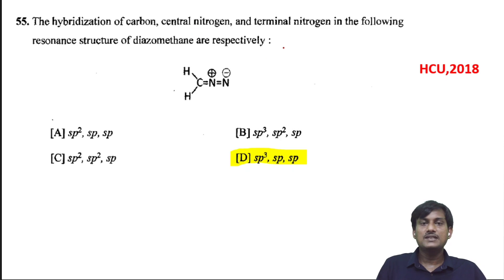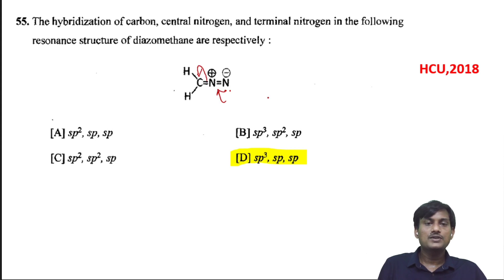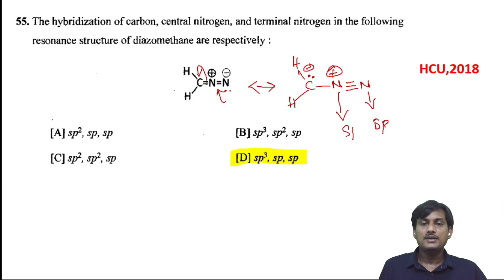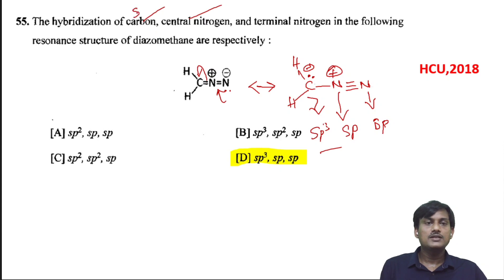The hybridization of carbon, central nitrogen, and terminal nitrogen in the resonance structure of diazomethane: taking the resonance structure, this compound has a lone pair of electrons that can move towards carbon. In another resonance structure, there is a negative charge; since the nitrogen has two pi bonds, it should be sp hybridized. The other nitrogen also has two pi bonds — sp hybridized. So the central carbon is sp3, and the central and terminal nitrogens are sp hybridized.